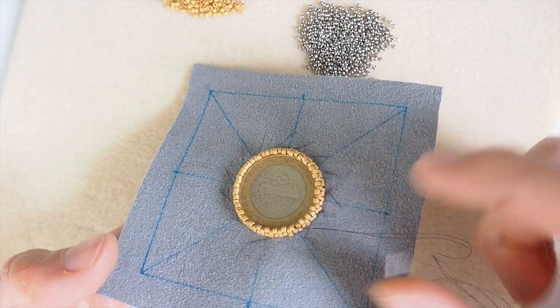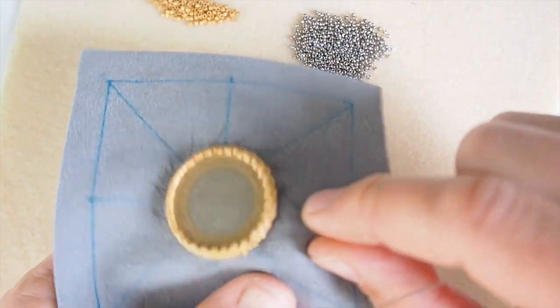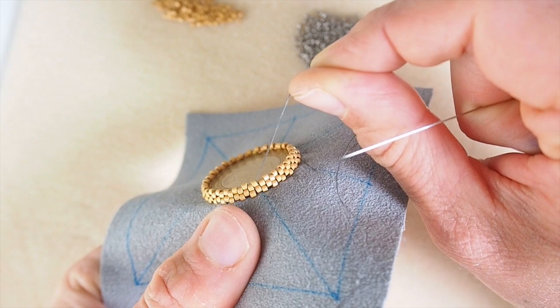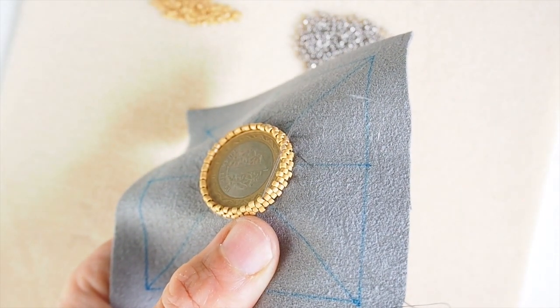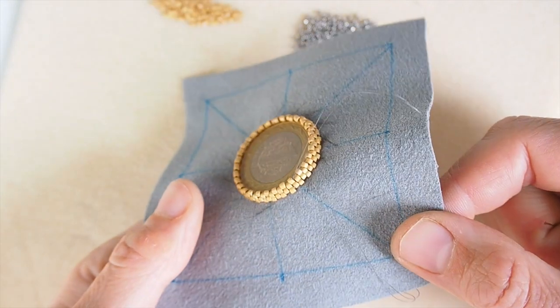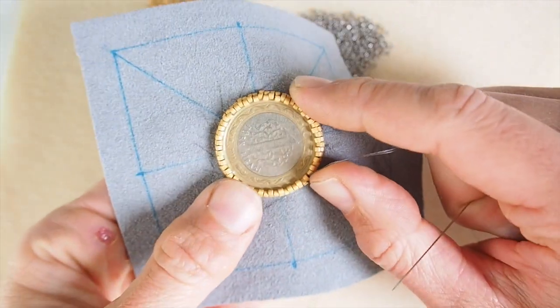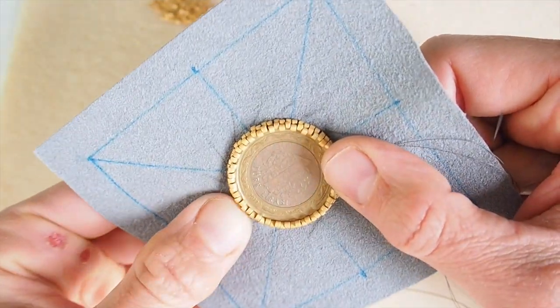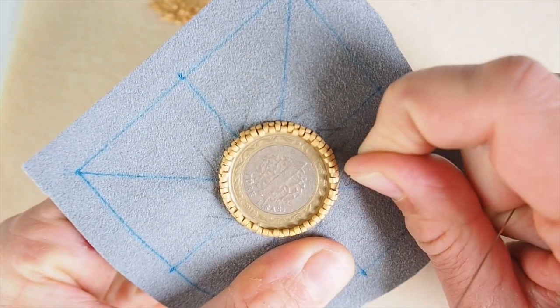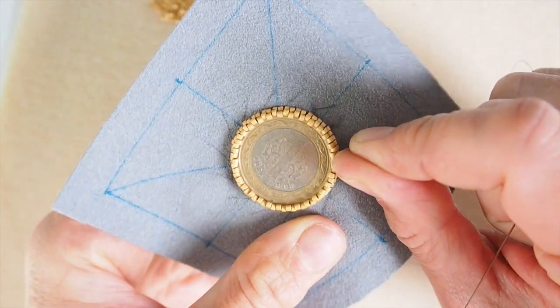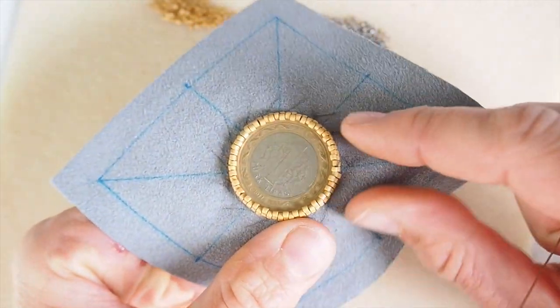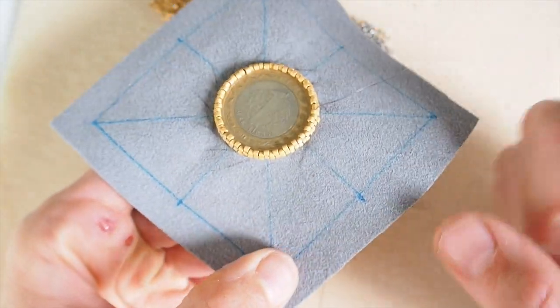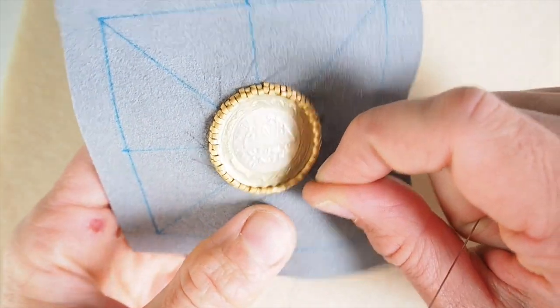I finished adding one more row of Miyuki Delica beads, and I stepped up after adding the last Miyuki. You see I'm exiting actually a Delica which I added in this last step. Now I definitely need to switch to the Miyuki round 15s. The bezel, when I pull the thread, I see that it already starts to curve over the coin. And if I continued adding Miyuki Delica beads, then the bezel would be too tall and it would not follow the lines of the coin.